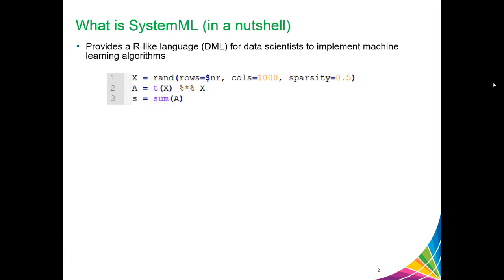Here is a sample DML script. In this script, we generate a random matrix X with 1000 columns and sparsity 0.5. The number of rows is provided by the user using the dollar parameter nr. We then multiply the matrix X with its transpose and compute the sum. It is important to note that DML simplifies the development and deployment of machine learning algorithms by separating algorithm semantics from the underlying data representation and runtime execution plans.